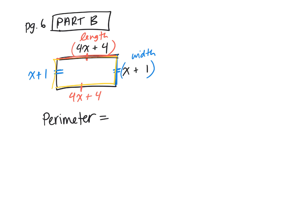So I'm going to take this side, 4x plus 4, and I'm going to add this, the x plus 1, and I'm going to add this, the 4x plus 4, and then I'm going to add this, the x plus 1. All we're doing is writing a simplified expression.